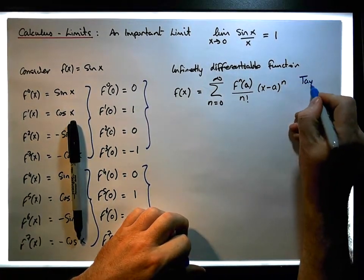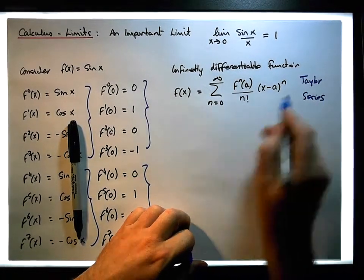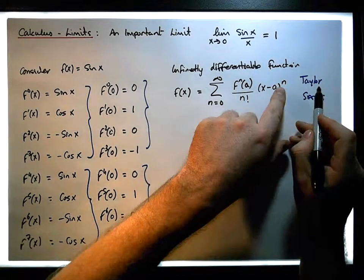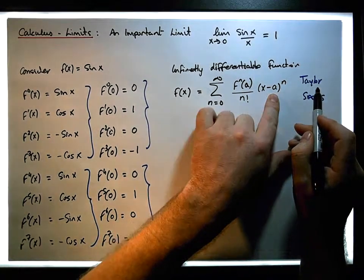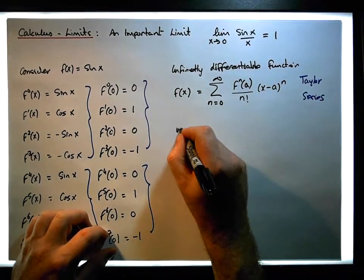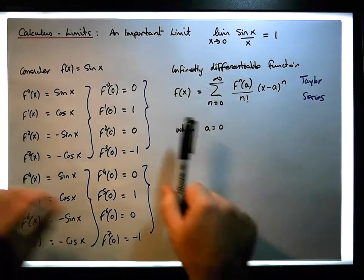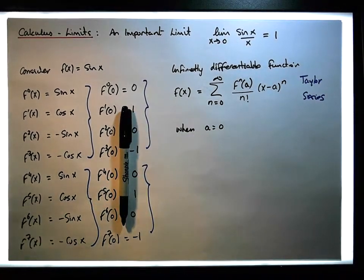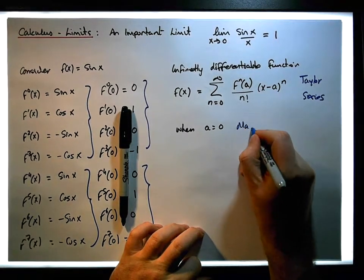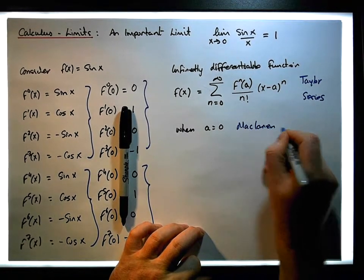What we're actually going to be interested in is the Taylor series estimated when a is equal to 0. So when a equals 0, we end up with what's known as the Maclaurin series.